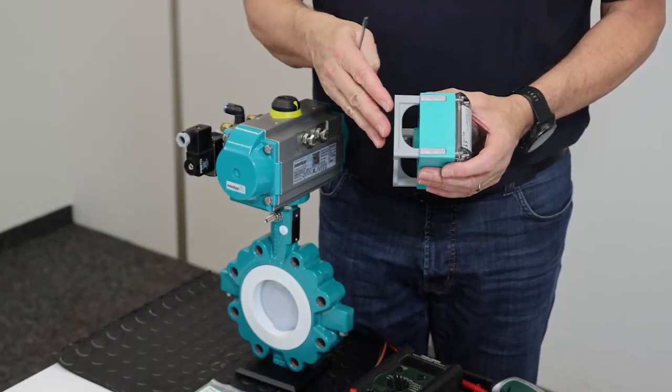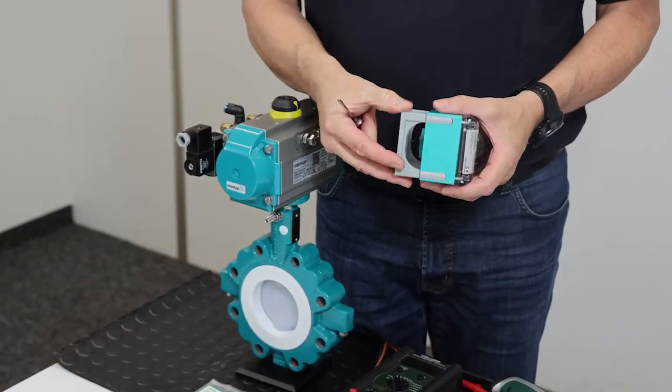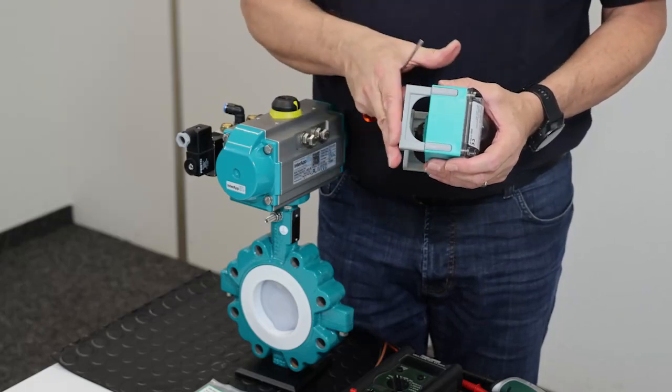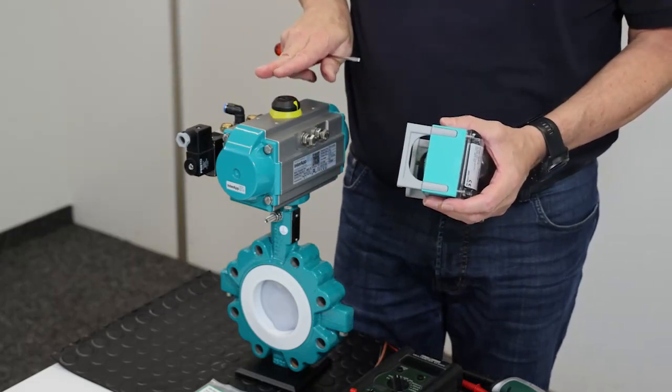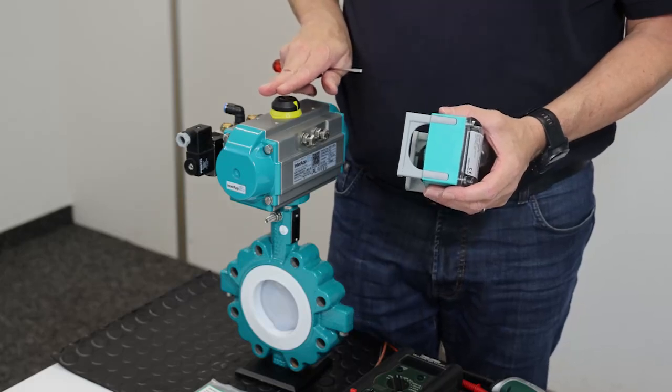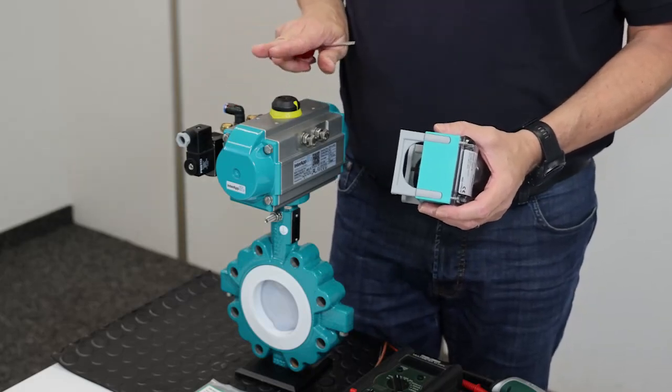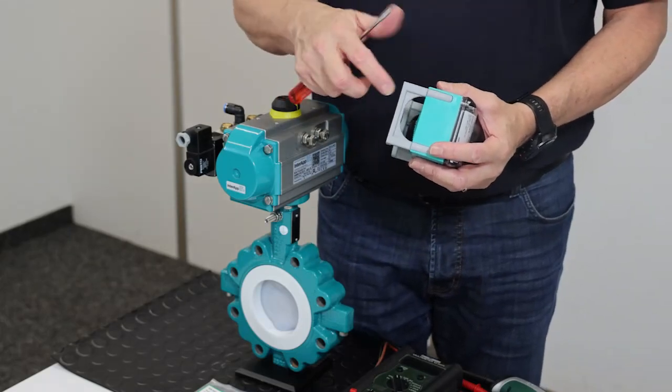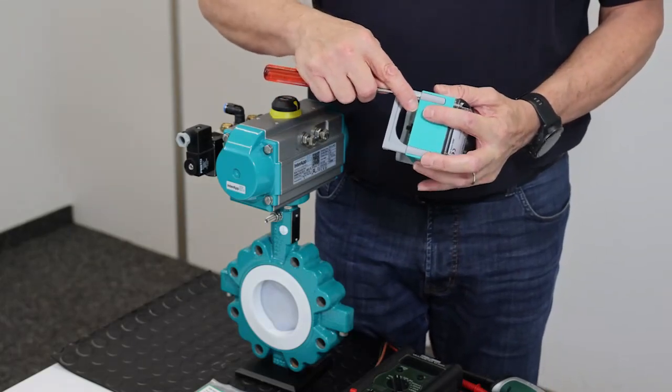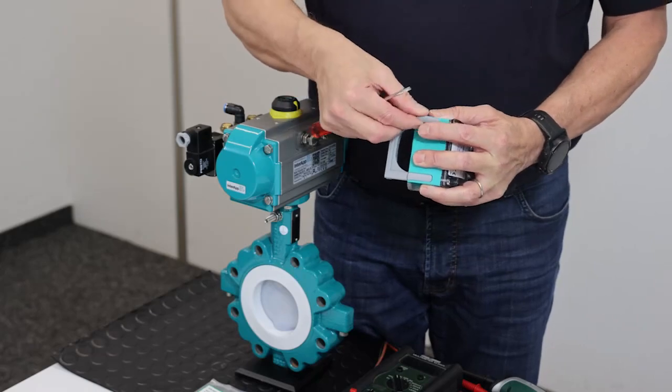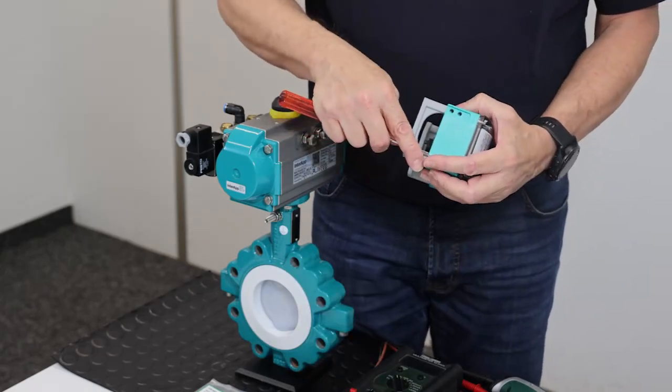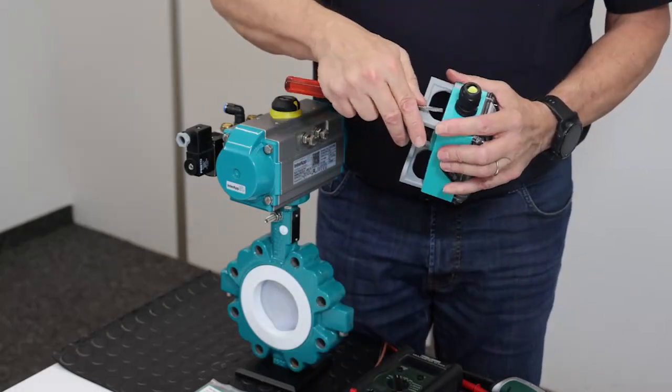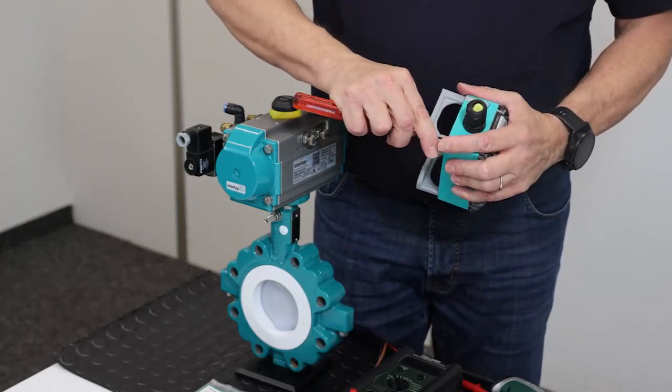On this limit switch box, we have so-called telescopic legs that we can move depending on the height of the shaft of the actuator. We have 20mm or 30mm, and depending on that we are changing the position of the legs. To be faster with the mounting of the legs on the actuator, I remove them.